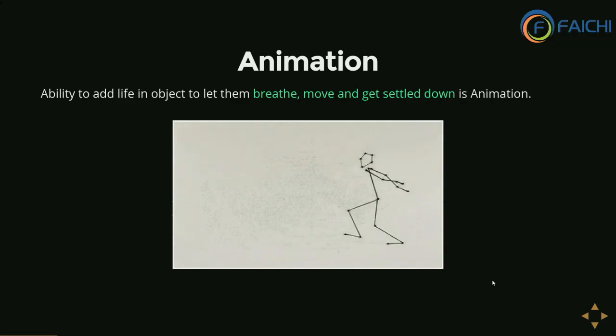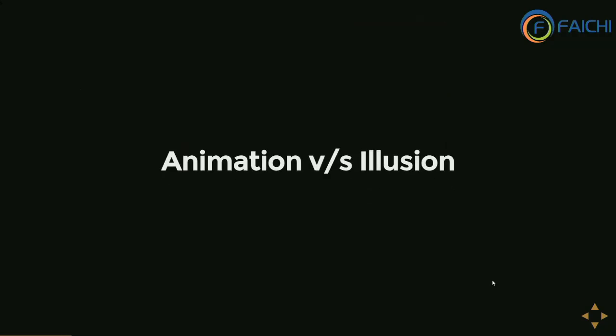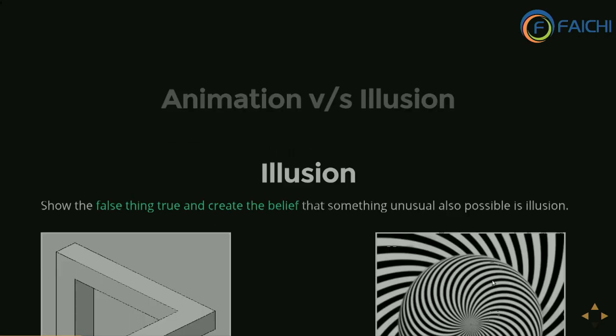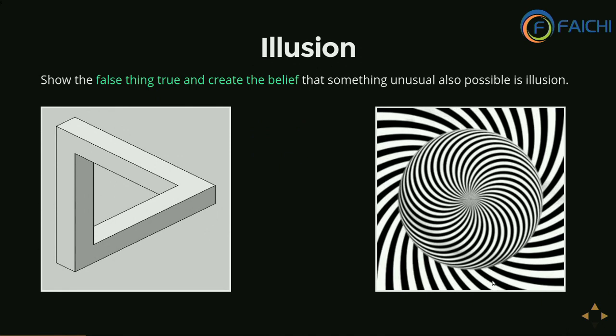Does animation mean illusion? Let's talk about animation versus illusion. An illusion is showing things as true and creating a belief that whatever we are showing is correct. On the left-hand side of the image, you would see a never-ending triangle — there is no starting point and no ending point. On the second image, you might have to go back and forth to feel the illusion effect. Don't concentrate on it for more than five seconds — you might get hypnotized.